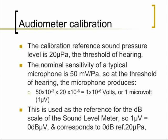The nominal sensitivity of any precision microphone is about 50 millivolts per pascal. If you were to use the threshold of hearing — 20 micropascals — in this equation, we can quickly determine that the sensitivity of a typical microphone is about 1 microvolt. So if it were to capture a sound right at threshold, the output of the microphone would be 1 microvolt, which is fed into the sound level meter.